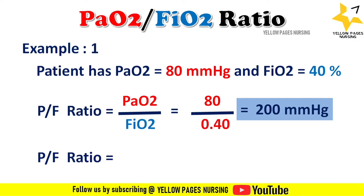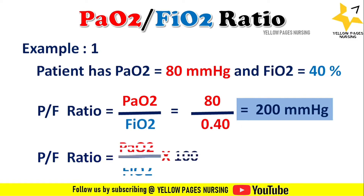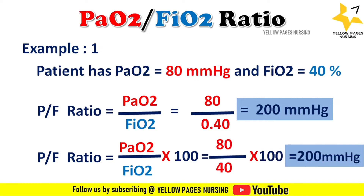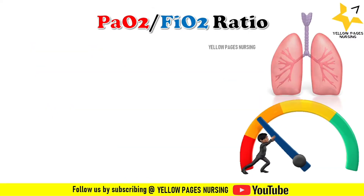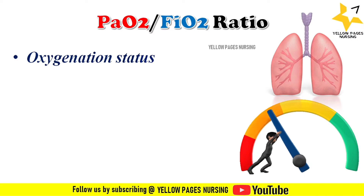This can also be done another way: PF ratio = PaO2 / FiO2 × 100. Hence, 80 divided by 40, multiplied by 100, gives 200 mmHg.